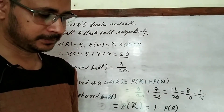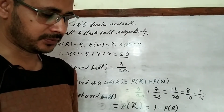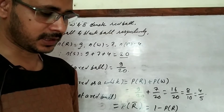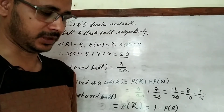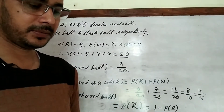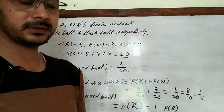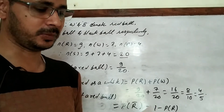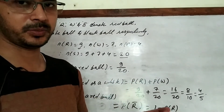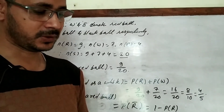Question number three is related to cards. A card is drawn from a deck of 52 cards. We need to find the probability that it is a spade, a red 8, a red 9 or a red 10, or a king or a diamond. In a deck of 52 cards there are 13 spades, 26 red cards, and 26 black cards. Using the mutually exclusive events formula P(A or B or C) = P(A) + P(B) + P(C), we can solve this problem.